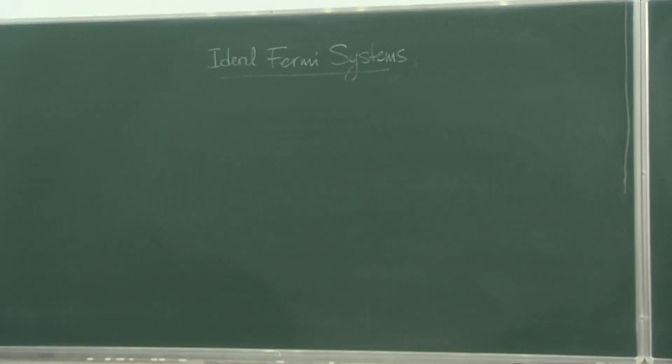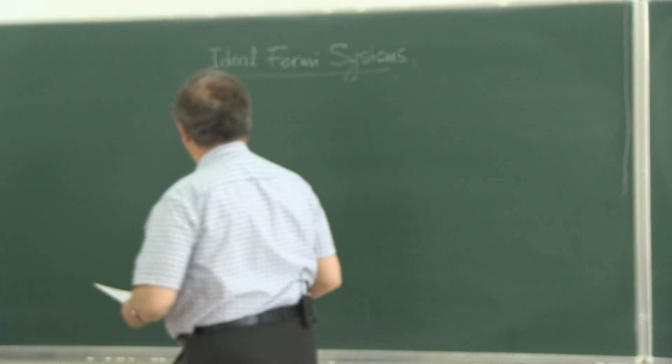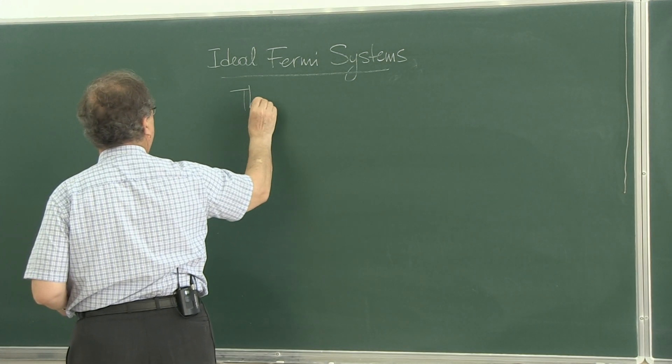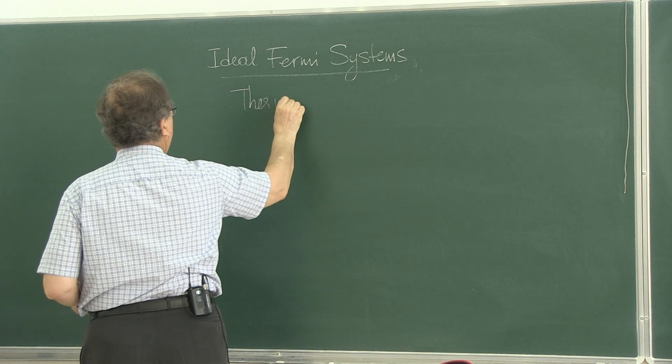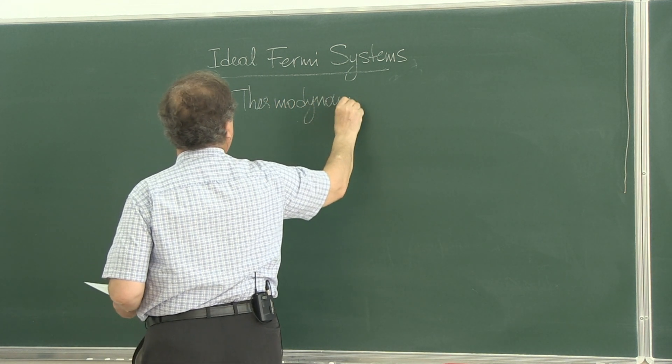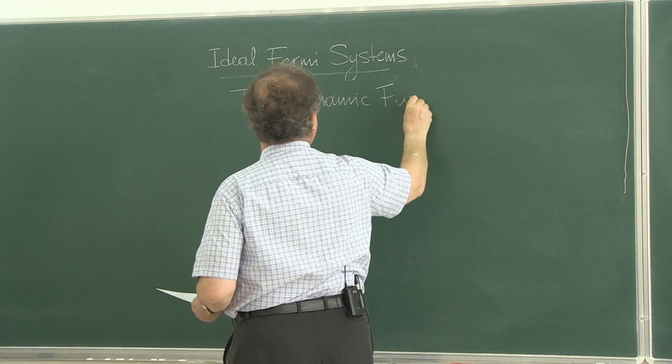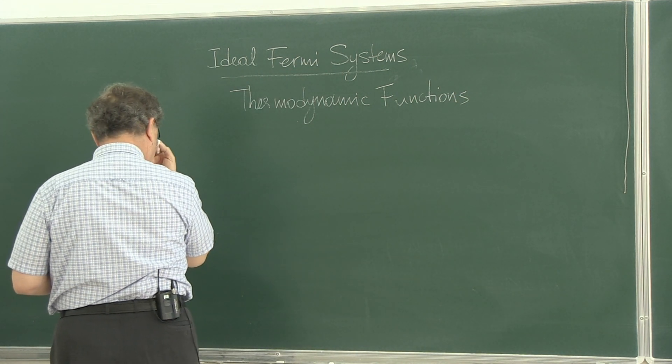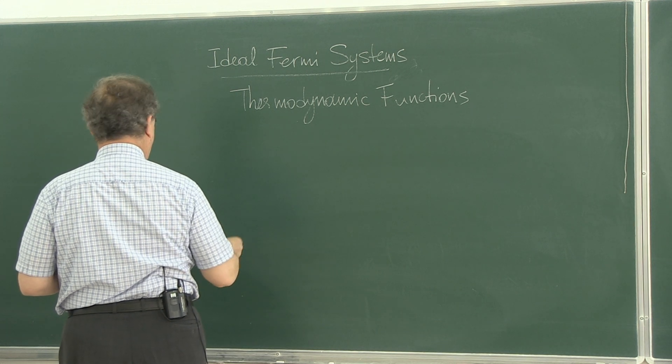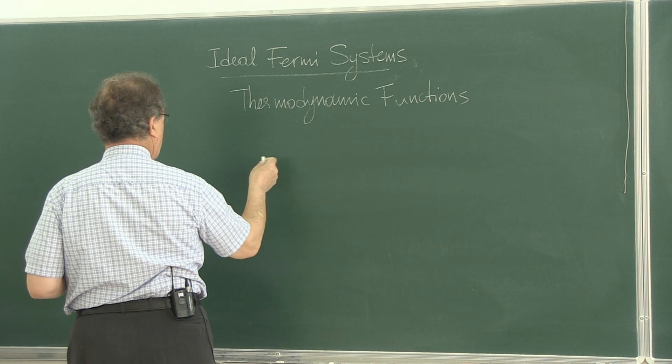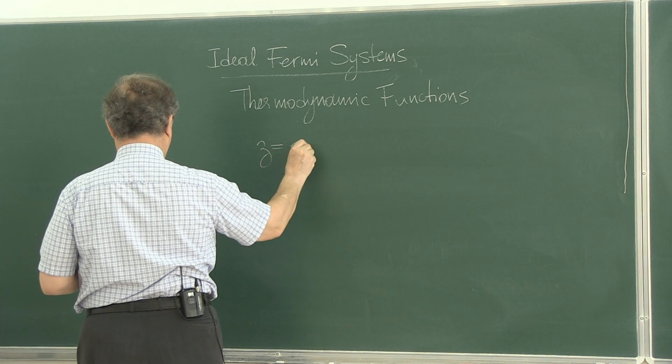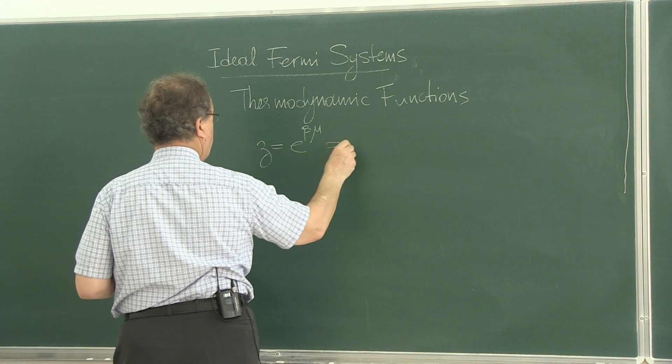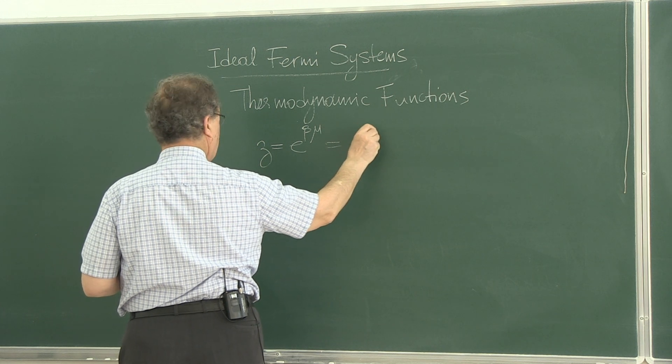The thermodynamic functions start from chemical potential, go to internal energy. Again, summary. Well, let's remember the definitions once more. z is e to the beta mu, call beta mu nu, e to the nu.